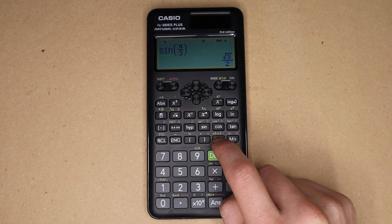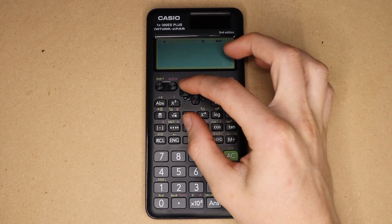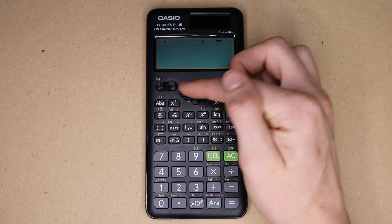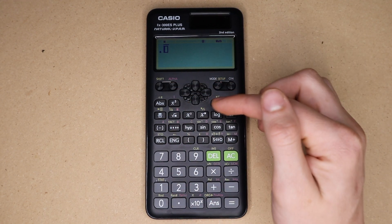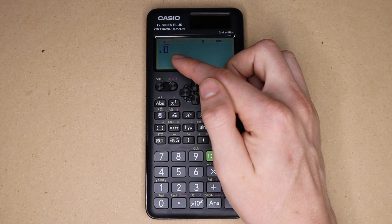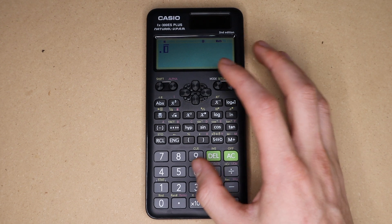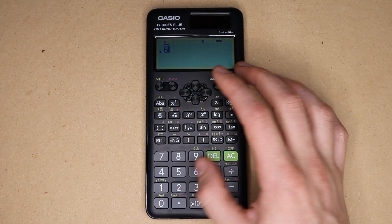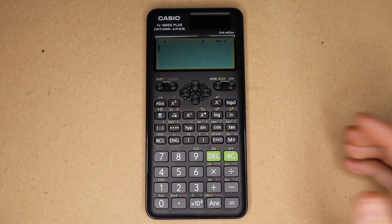A couple random features that are included here: first of all is this repeating decimal function. If you press alpha and then square root it'll bring up this template here with a little line above it which is the repeating decimal symbol. So if I just type in point six and then press the equals sign it will give me that as a fraction.